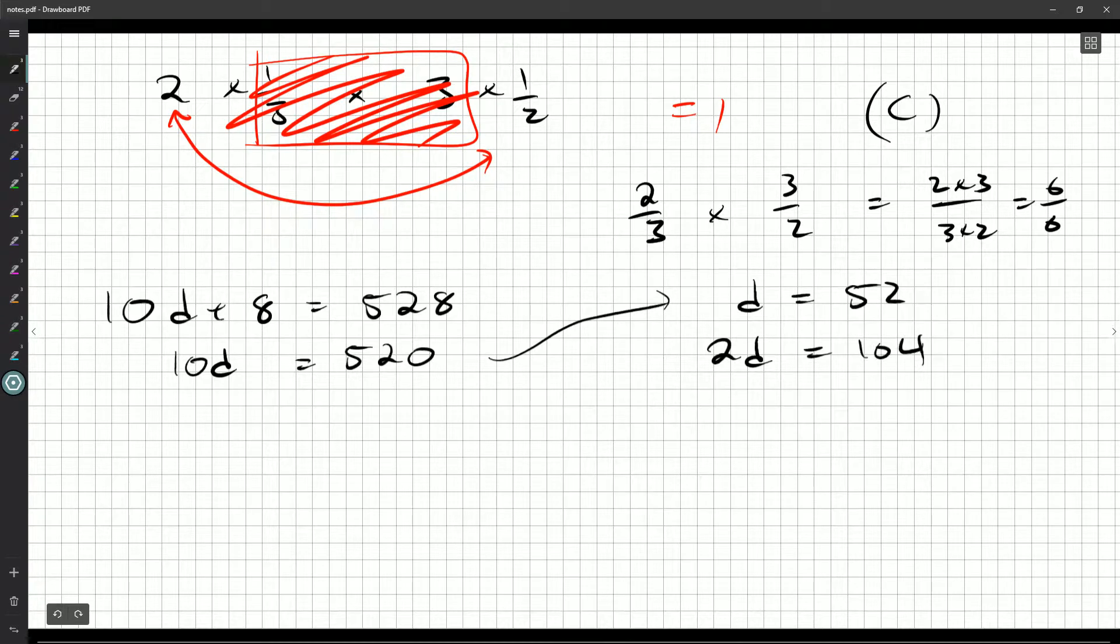But they're just asking me for 2d. Do I really need to know what d is? No, we don't. So if you wanted to, you could just divide both sides of this by 5. Why 5? Well, 10 divided by 5 is 2. So we'd get our 2d right away. And that might be a slightly faster way to do it.